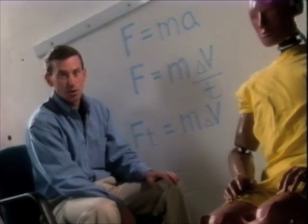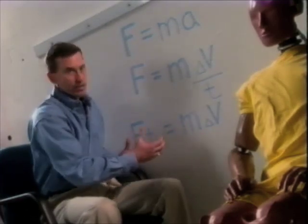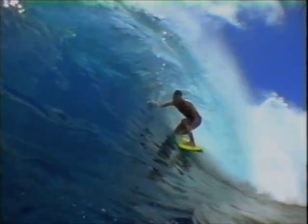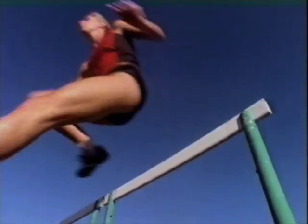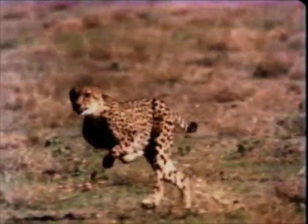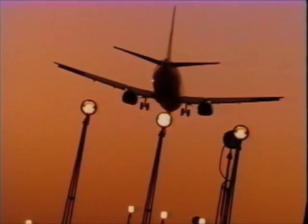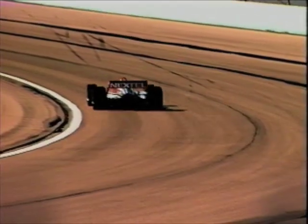When Newton described the relationship between force and inertia, he actually spoke in terms of changing momentum with an impulse. What do these terms mean? Momentum is inertia in motion. Newton defined it as the quantity of motion — it's a product of an object's mass, its inertia, and its velocity or speed.